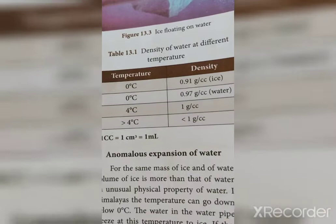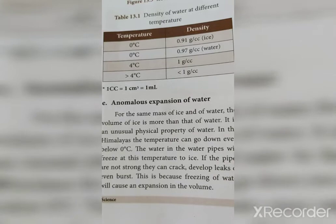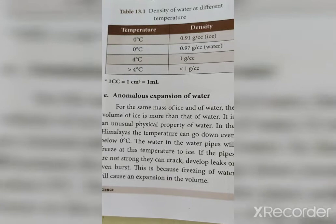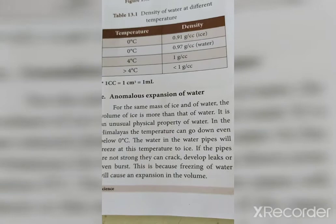Regarding anomalous expansion of water: for the same mass, the volume of ice is more than that of water. In the Himalayas, temperatures can go below 0°C; water in pipes will freeze to ice. If the pipes are not strong, they can crack, develop leaks or even burst, because freezing of water causes an expansion in volume.